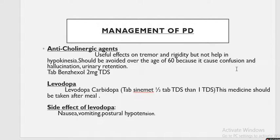Anticholinergics should be avoided over age 60 because they cause confusion, hallucination, and urinary retention. If a patient already has prostate enlargement and Parkinson's disease and you give anticholinergics, you may put the patient in danger. So avoid them in patients over the age of 60.